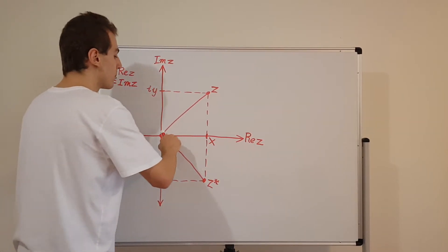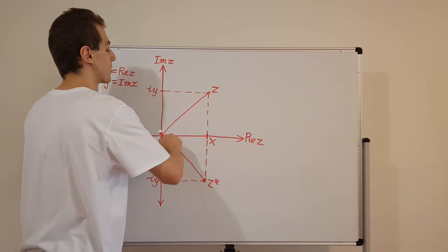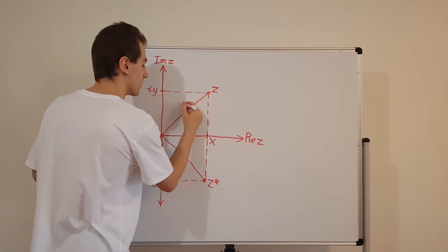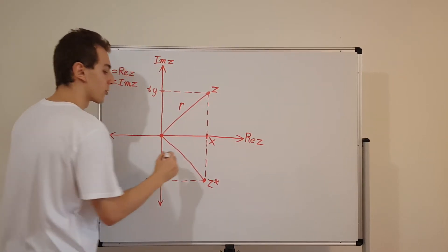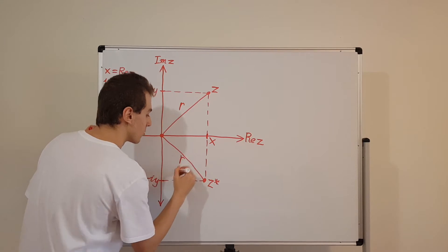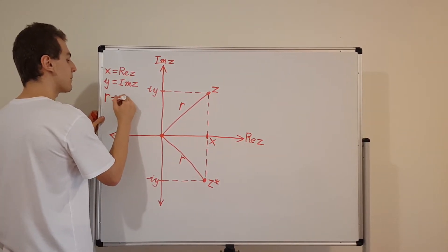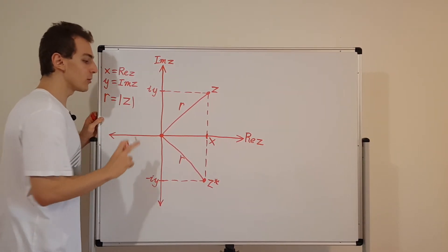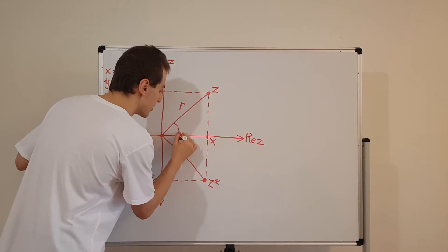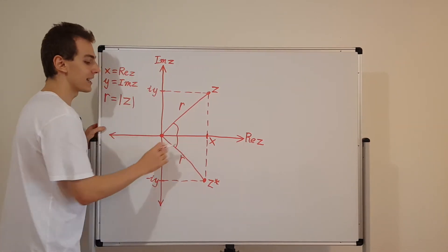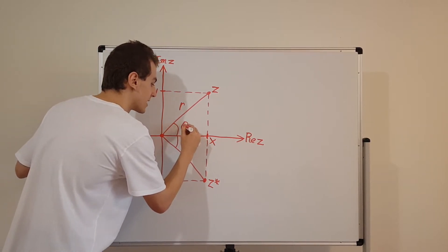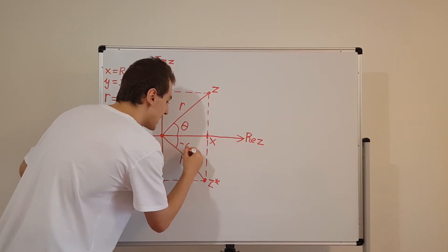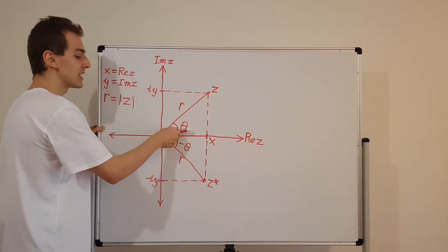I also want to label the magnitude of this complex number. The magnitude is the length of the line that goes from the origin to the point — I'm going to call that r. So r is the same as the magnitude of z. I'm also going to add an angle to this diagram. This angle is theta, and this angle down here I'm going to call minus theta, because it is the same angle, just in the downward direction.